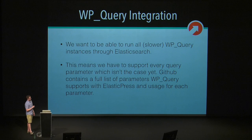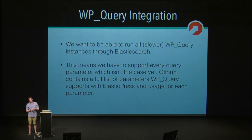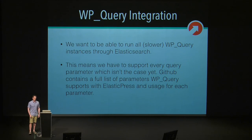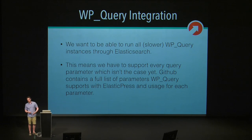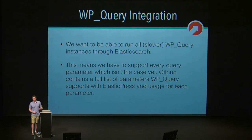The goal of the project is to be able to run all slower WP query instances and search instances through Elasticsearch. This means we have to support every single argument that WP query supports, which is quite the task. Some of the arguments don't make sense or aren't even possible. I would encourage you to check GitHub for a full list of the WP query parameters that we can actually support.